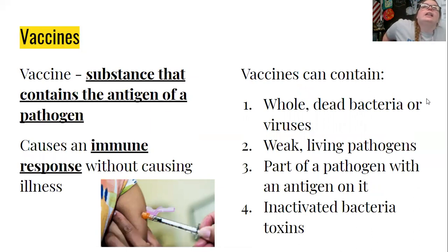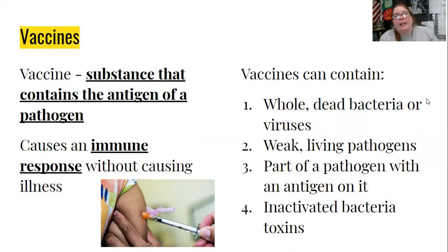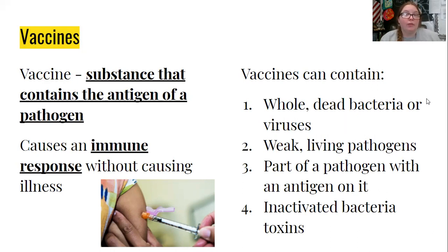Vaccines — all a vaccine is, is a substance that contains an antigen. By doing this, we put a little piece of whatever into your body so your immune system doesn't have to wait for a full infection to make an immune response. When I use a vaccine, I'm basically handing a wanted poster to my immune system — 'if you ever see this, you need to arrest them.' We don't have to wait for the disease to do something bad; they're already on the lookout for it. Vaccines cause an immune response without causing illness.